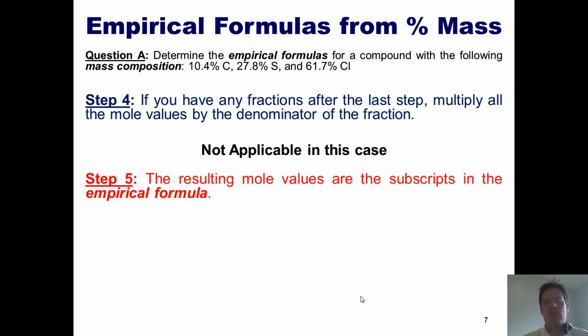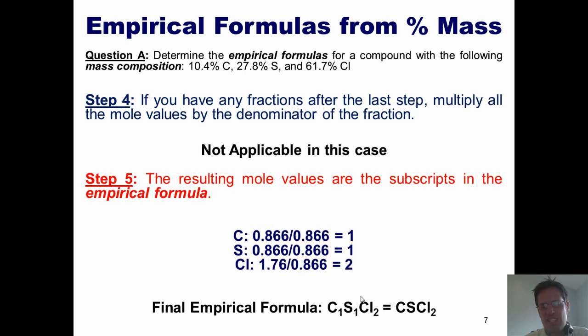Step five, the resulting mole values are the subscripts in the empirical formula. So I got carbon as being one, sulfur as one, and chlorine as two. So the final empirical formula is C1, S1, Cl2, or CSCl2. Does that make sense? I hope so. If not, take a look at the next problem.